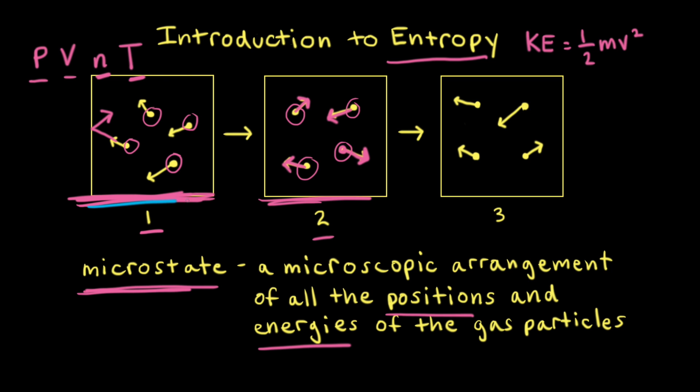Going back to our boxes — box one, box two, and box three — each box shows a different microscopic arrangement of positions and energies of the gas particles. Therefore, each box represents one microstate.